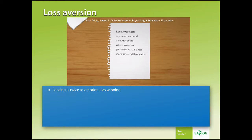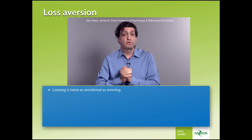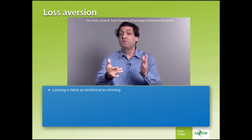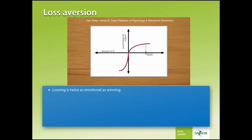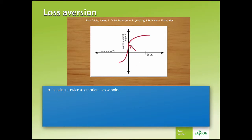There are all kinds of consequences of this idea of loss aversion. It's important to realize that losses are not just around zero — it's around where you are. Imagine that I give you $50,000 a year as a salary. Once I gave you that amount, you look at any reduction from that new point, and if I try to take something away, it becomes incredibly unpleasant. If losing is twice as emotional as winning, then how does that reflect to games?